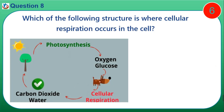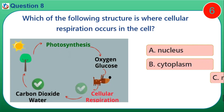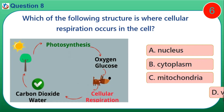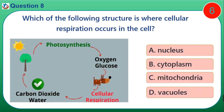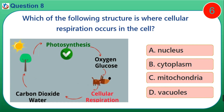Question 8. Which of the following structures is where cellular respiration occurs in the cell? A. Nucleus. B. Cytoplasm. C. Mitochondria. D. Vacuoles.